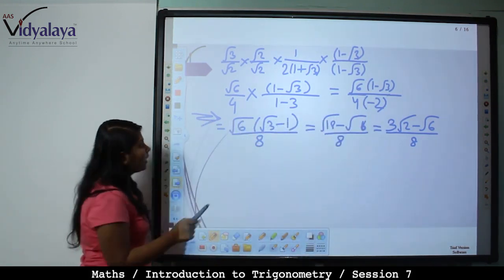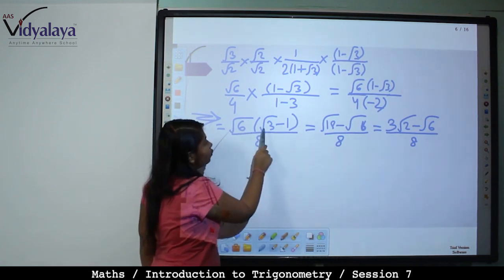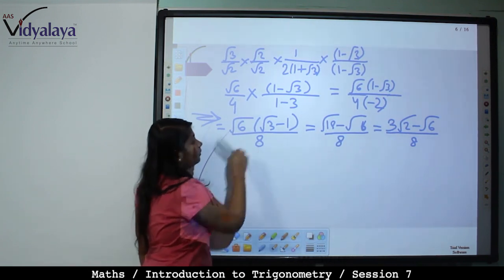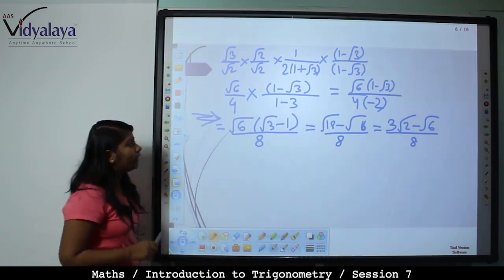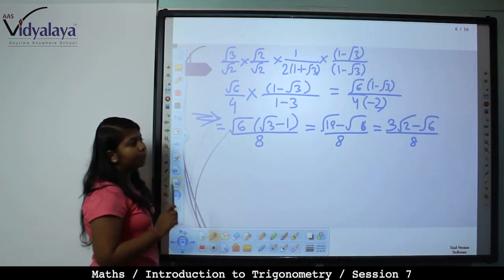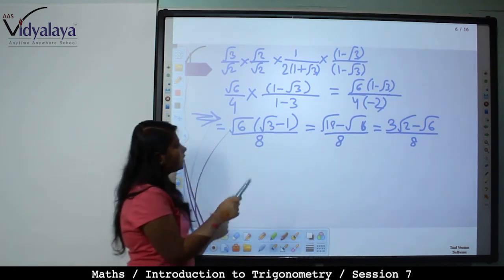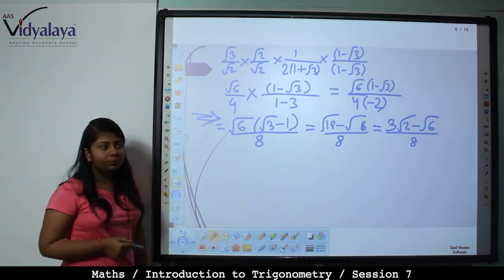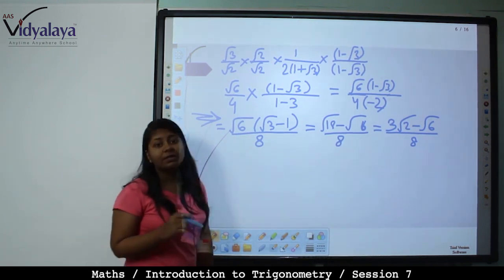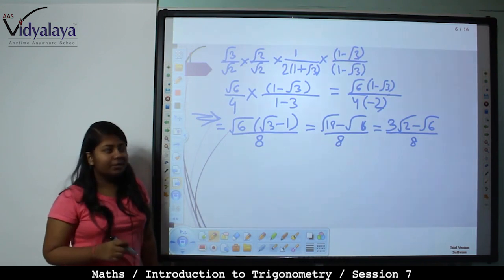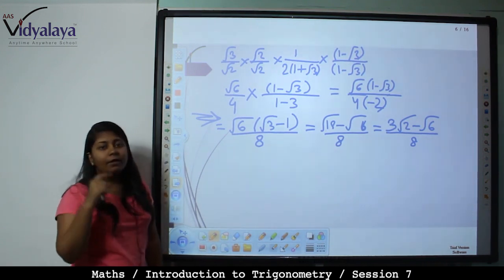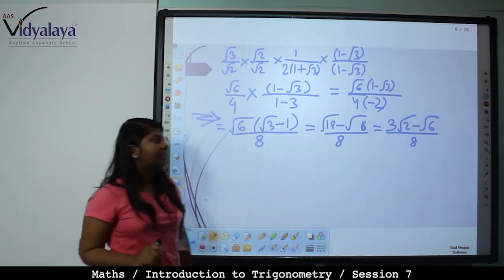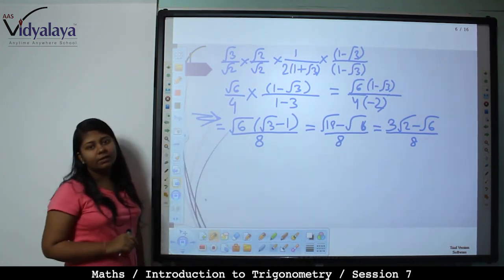So this becomes root 6 into (root 3 minus 1) upon 8. Open the bracket: root 6 into root 3 is root 18, minus root 6 upon 8. Root 18 can be written as 3 root 2, because 3 squared times 2 is 18. So the final answer is 3 root 2 minus root 6 upon 8.